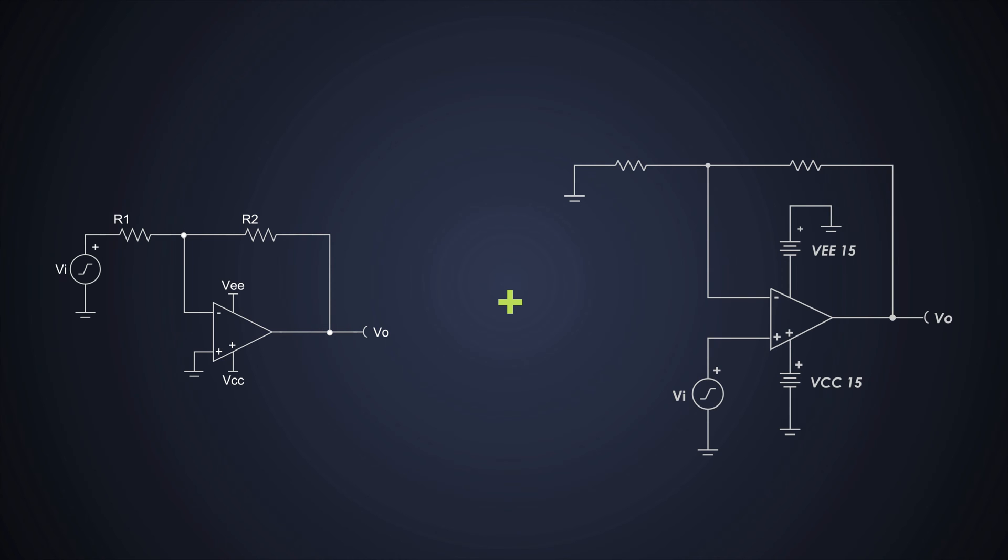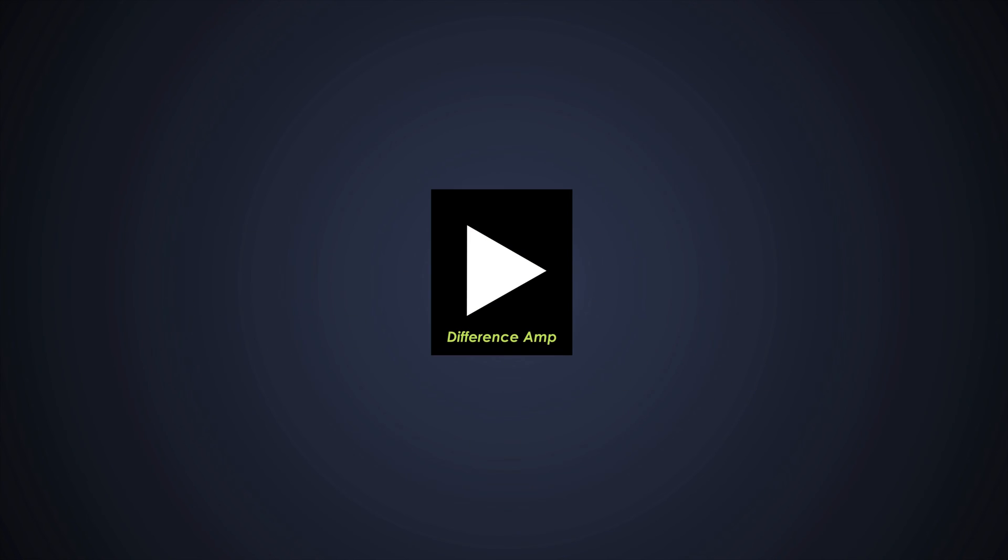I hope you are getting it. So to avoid that, we have to use some closed-loop mechanism like we use in inverting and non-inverting amplifiers. And that's where this difference amplifier comes into picture.